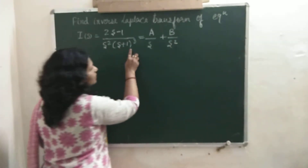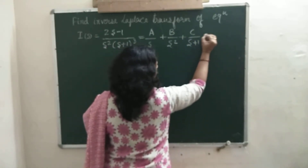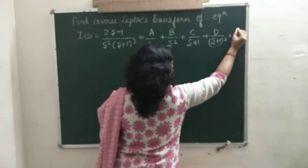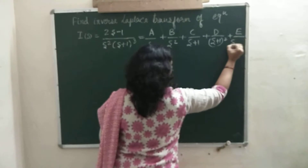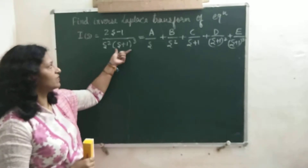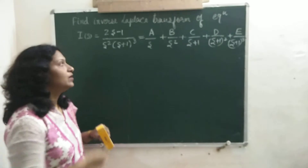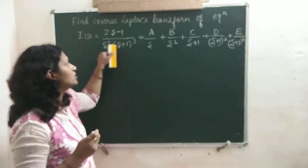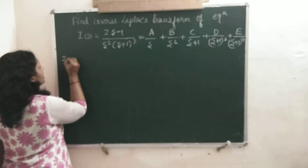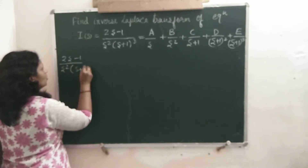Then for (S plus 1) whole cube, there will come three terms: C upon (S plus 1), D upon (S plus 1) whole square, and E upon (S plus 1) whole cube. Three terms for this (S plus 1) whole cube — S plus 1, (S plus 1) whole square, and (S plus 1) whole cube. For the whole cube, that many terms come. On the left hand side there is (2S minus 1) divided by S squared times (S plus 1) whole cube.